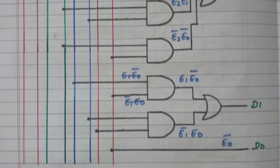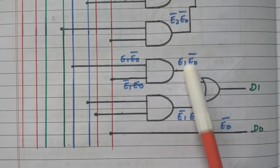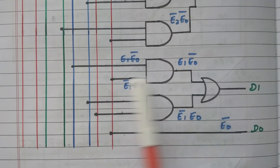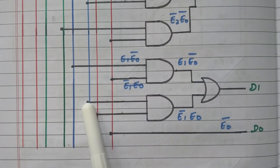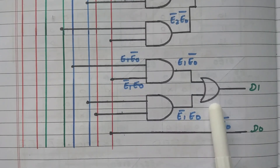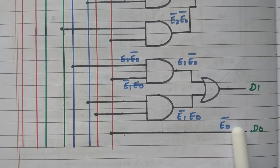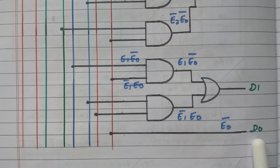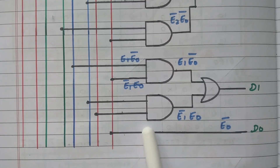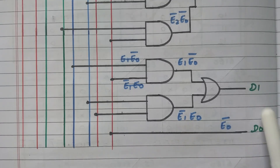For D1: two AND gates produce E1·E0' and E1'·E0, and these are added by an OR gate to give D1. D0 is simply E0' — directly connected without any gate. This is the LSB of the BCD code. So by connecting these logic gates, the XS3 inputs E3, E2, E1, E0 are converted to BCD outputs D3, D2, D1, and D0.